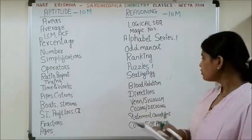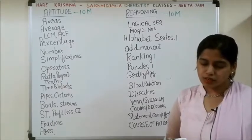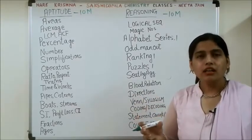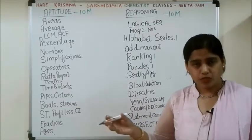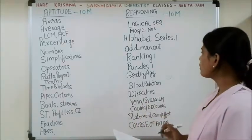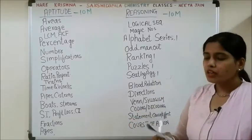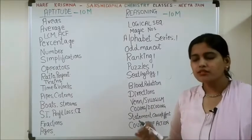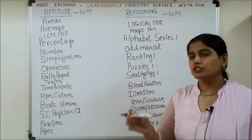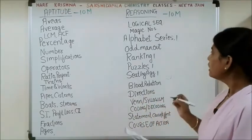Question number 63 is from ranking. Question number 64 is sitting arrangement — where in a bus, a row, or a column you have to decide the exact position of a person; that type of question is called sitting arrangement. The next question, number 65, is a blood relation question — for example, P, Q, R, S are given with relations like father, daughter-in-law, and brother, and you have to find the relation between P and Q.